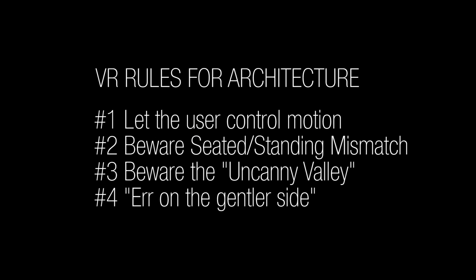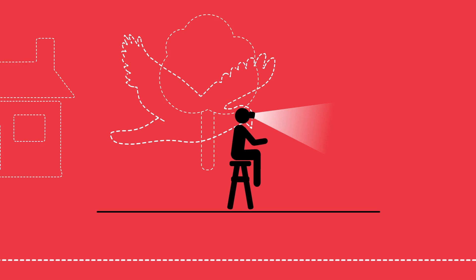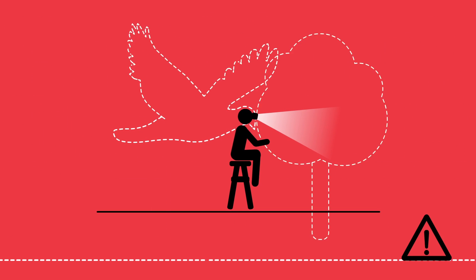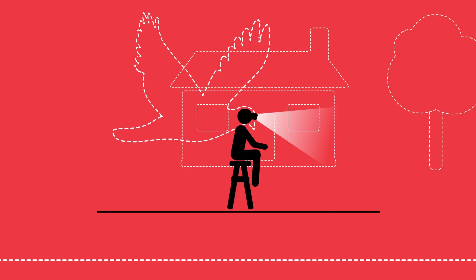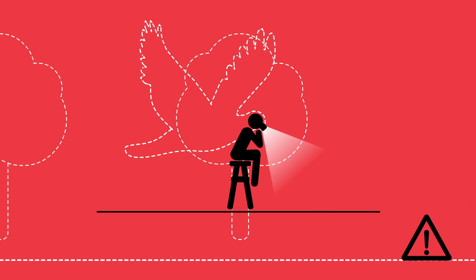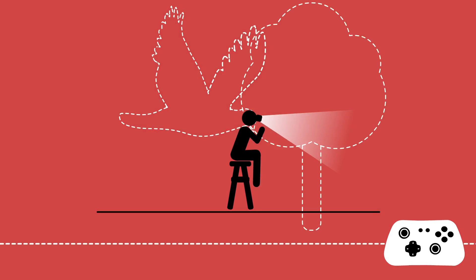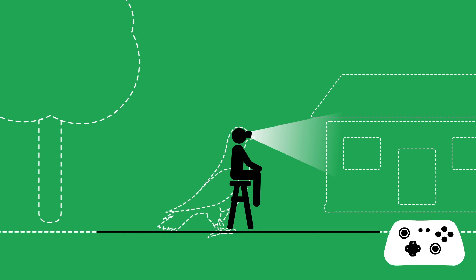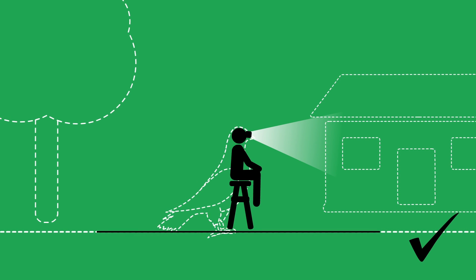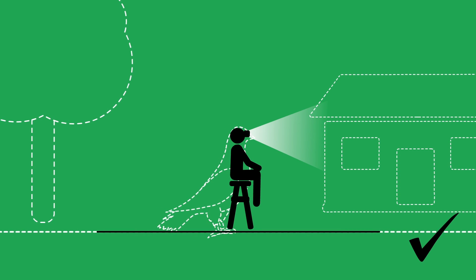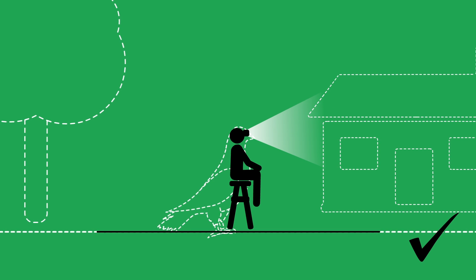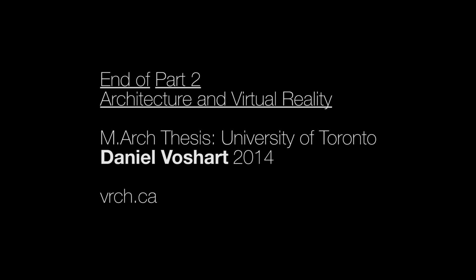Fourth and final rule: err on the gentler side. In other words, don't force someone through a fly-through — it's going to make them sick. Have them move at a very slow pace. It's the same as rule number one; it bears repeating.